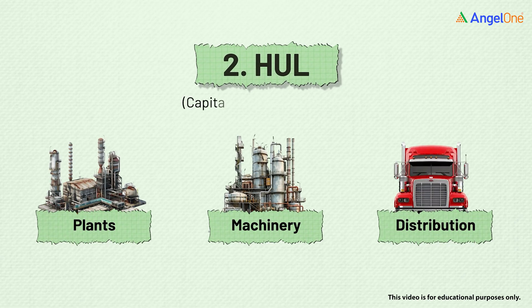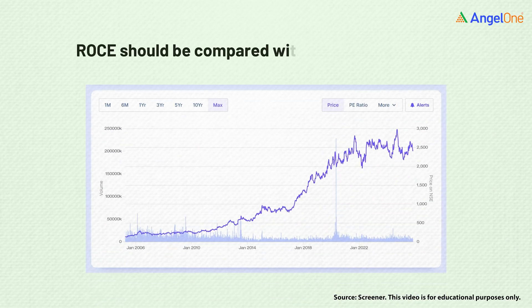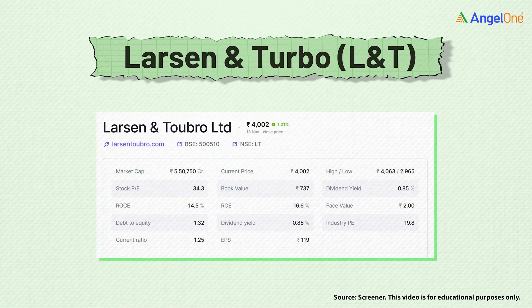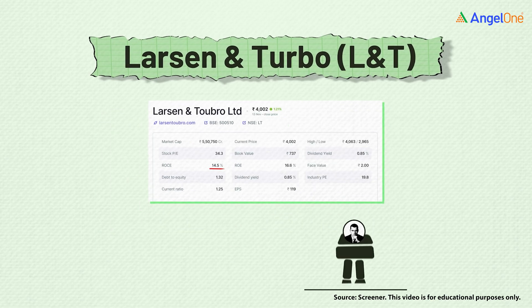Why? Because HUL needs to invest heavily in plants, machinery, and distribution — it's a more capital-intensive business. So the key takeaway is: ROCE should be compared within the same industry, not across very different ones. It's less about who's better and more about how efficiently each company uses capital within its own business model.